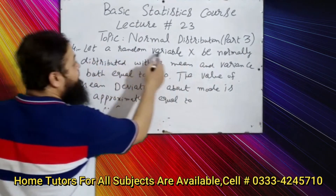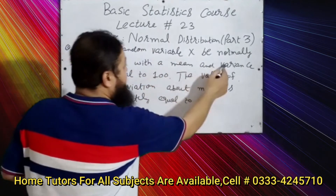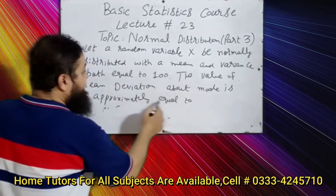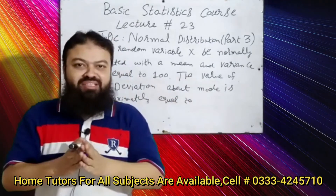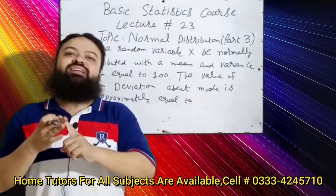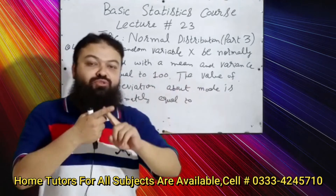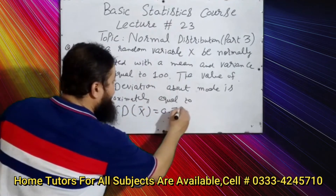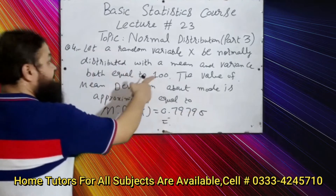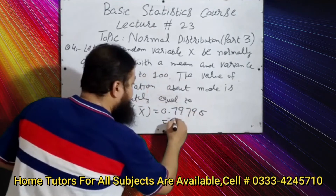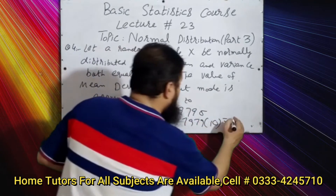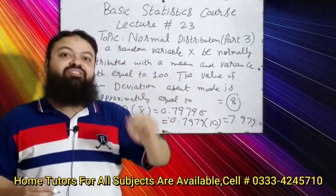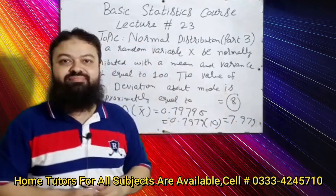Question number four: let a random variable X be normally distributed with mean and variance both equal to 100. The mean deviation about mode is approximately equal to? In the normal distribution, mean, median, and mode are equal, so mean deviation about mode equals mean deviation about mean, which is 0.7979σ. Since variance = 100, σ = 10. So 0.7979 × 10 = 7.979, approximately 8. The correct option is 8.